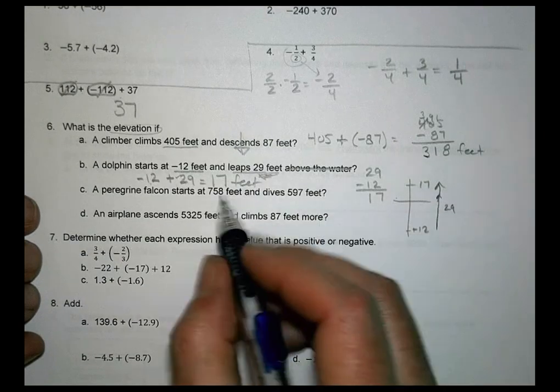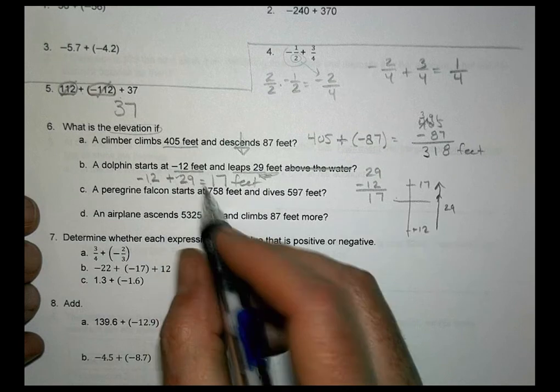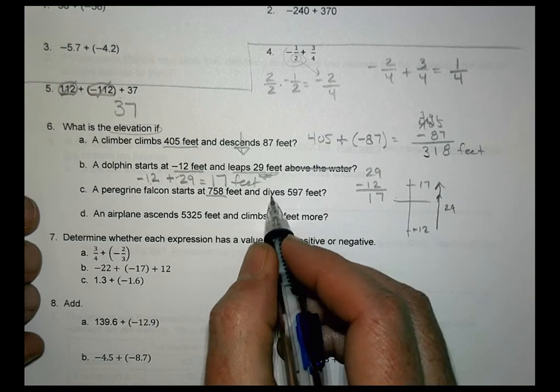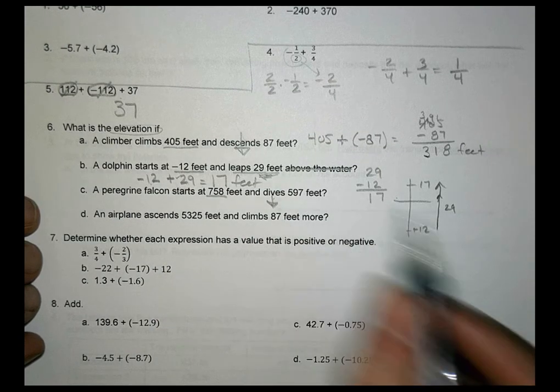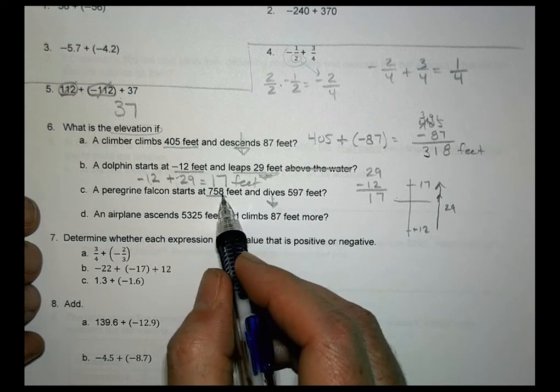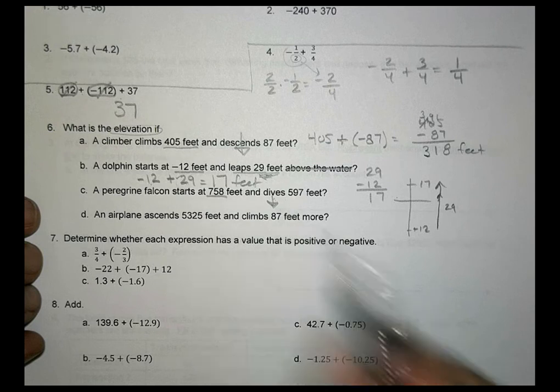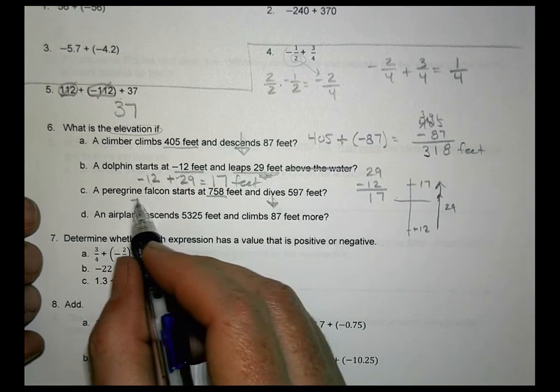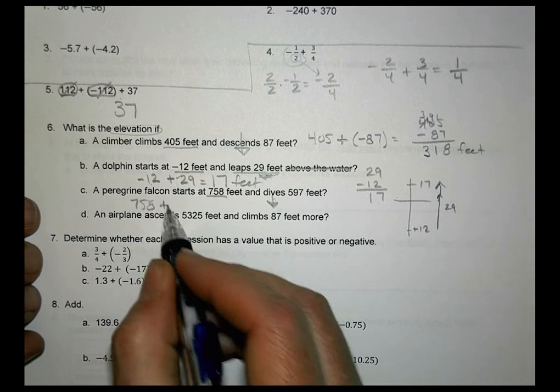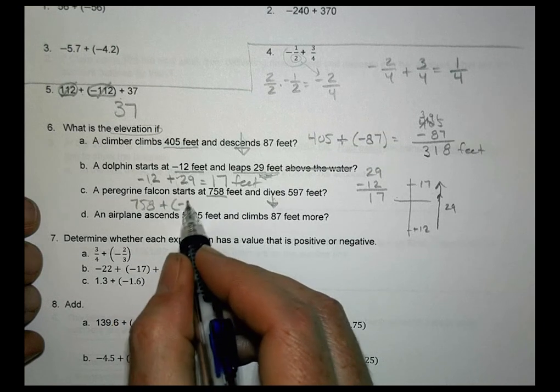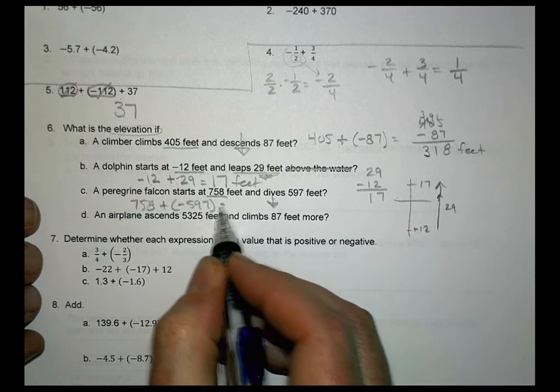This next one here, we can just see it's a Peregrine Falcon, starts at 758 and dives 597. So you're going to write down an equation that shows 758, and then we're adding negative 597. So solve that one there. 758, and we're going to be adding a negative 597. I'm going to let you do that there.